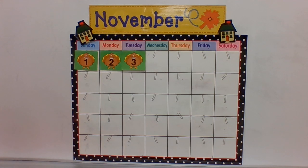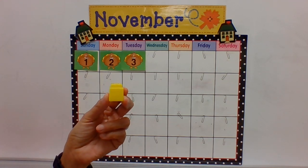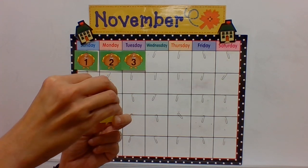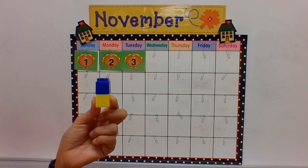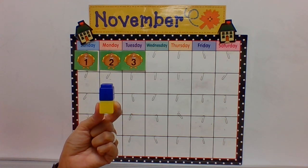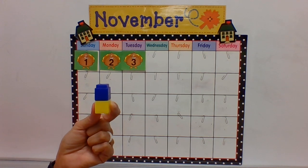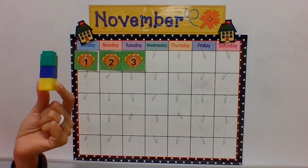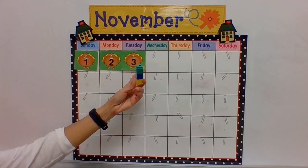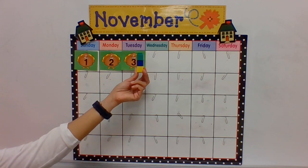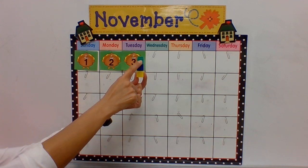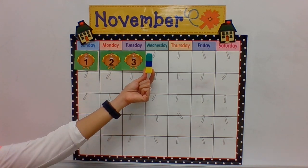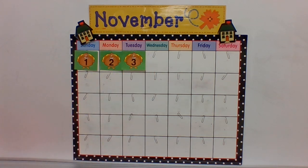Now we will stack three blocks for the number three. Here we go — one, two, three! Three blocks for November 3rd. One, two, three. Have a good Tuesday!